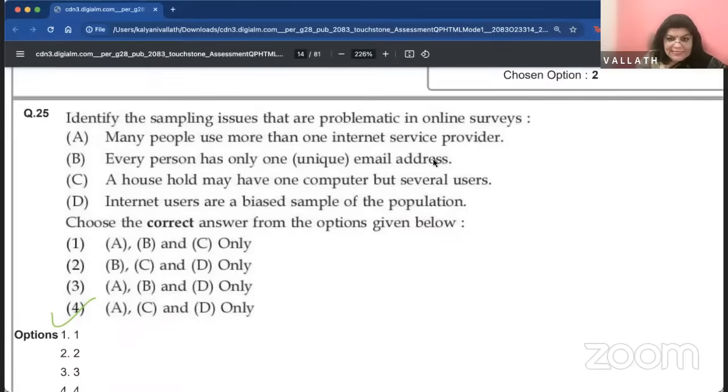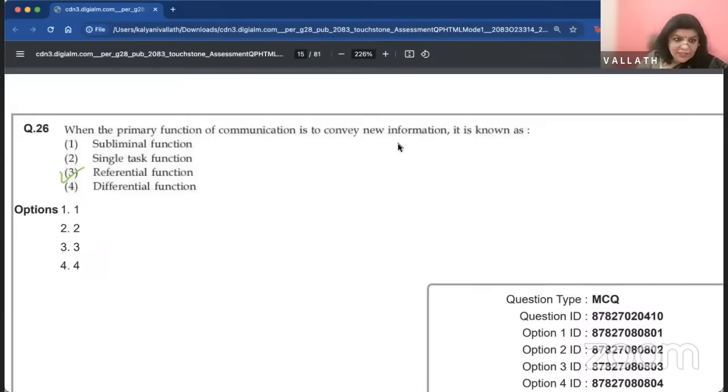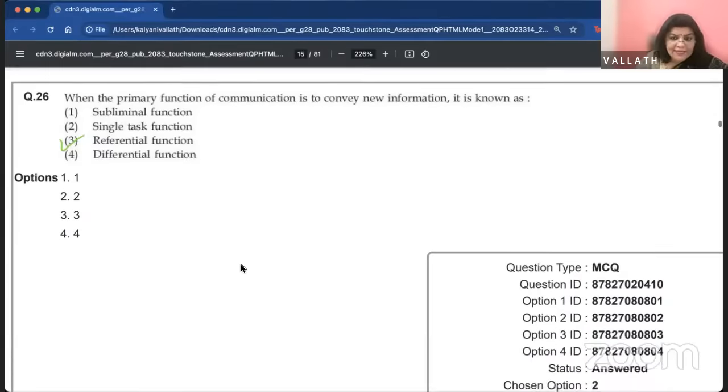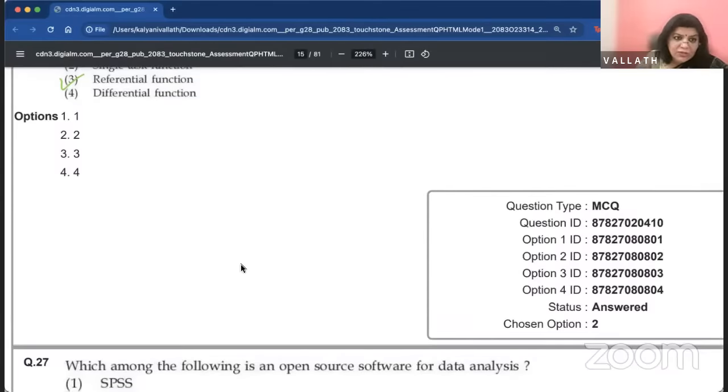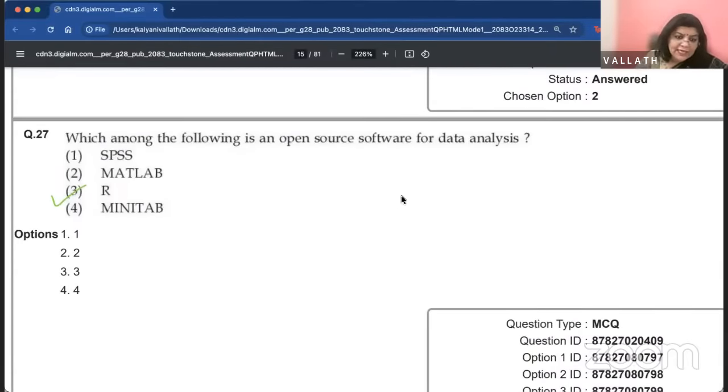Identify the sampling issues that are problematic in online surveys. Many people use more than one internet service provider. A household may have one computer, but several users. Internet users are a biased sample of the population. These are the answers given by NTA. When the primary function of communication is to convey new information, it is known as a referential function.